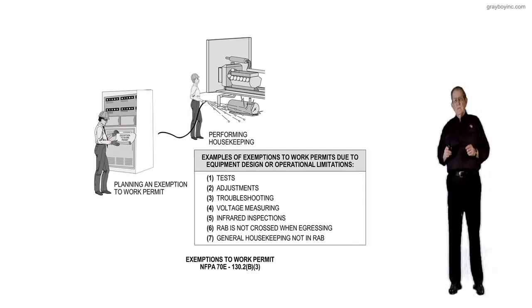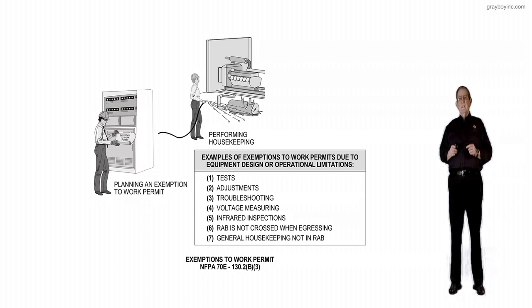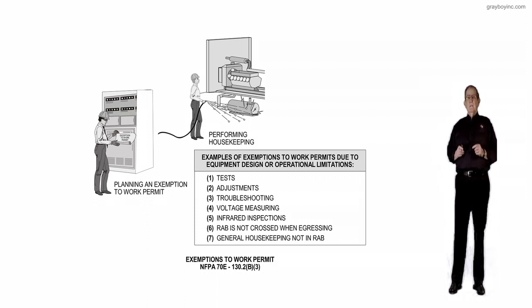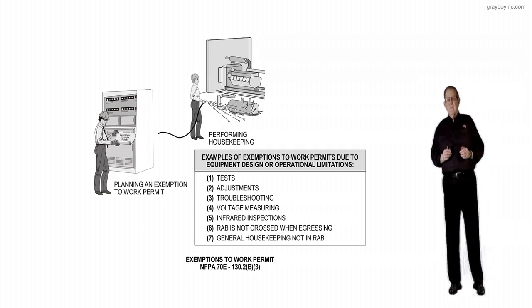This illustration deals with exemptions to the work permit in accordance with NFPA 70E 130.2B3. Now, notice where a company or facility allows such a thing under the conditions in the boxed-in information.